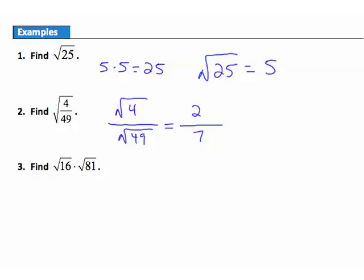Example 3: find the result of the square root of 16 times the square root of 81. The square root gets evaluated during the exponent stage, before the multiplication. The square root of 16 is 4, and the square root of 81 is 9. Then we multiply: 4 times 9 is 36.